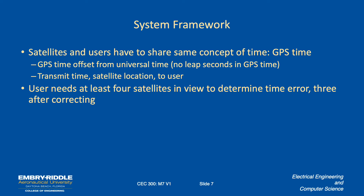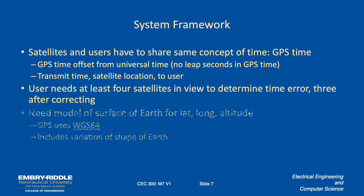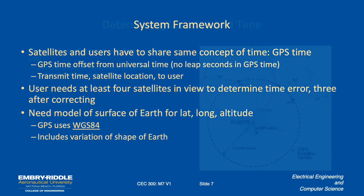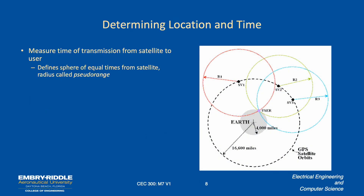From four satellite measurements you can determine your position and the amount of time error in the local clock relative to GPS time shared by the space vehicles. The system also uses a model of the Earth with latitude, longitude, and altitude — the WGS-84 model discussed previously — and must have knowledge about the shape of the Earth, the geoid, including where there can be gravitational anomalies.